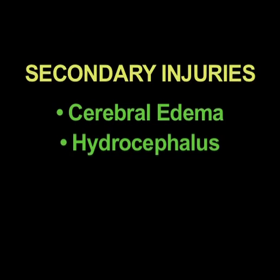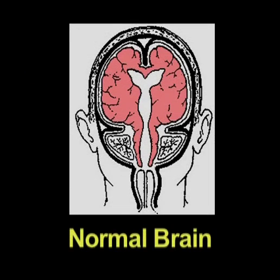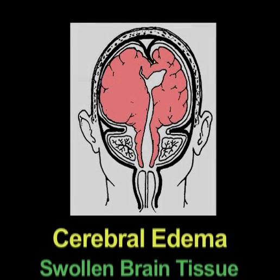In addition to these types of injuries that occur by actual forces on the brain, there are different types of injuries — what we call secondary injuries — that occur. Those three types are cerebral edema, hydrocephalus, and hematomas. In cerebral edema, the brain is swelling, and as a result there is no room in the skull for the brain, so it begins to compress brain tissue.